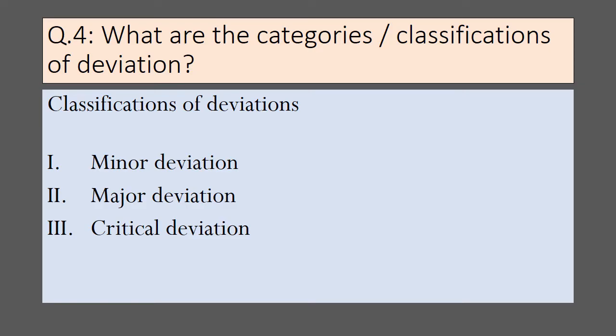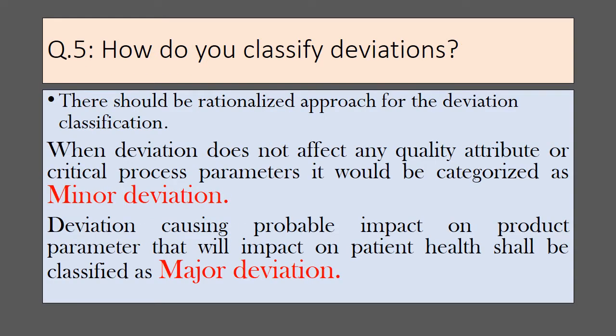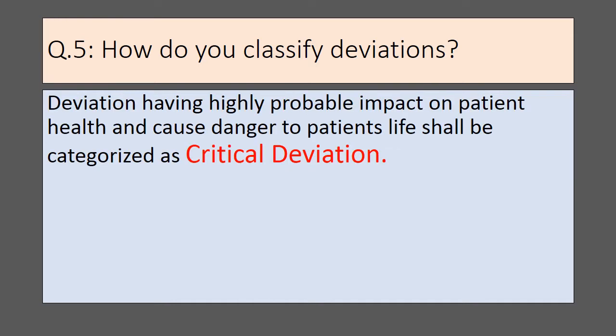What are the categories or classifications of deviations? Deviations are majorly classified into three categories: minor deviations, major deviations, and critical deviations. When a deviation does not affect any quality attribute or critical process parameter, it is categorized as minor. A deviation causing probable impact on a product parameter that affects patient health is classified as major. Deviations having a highly probable impact on patient health and causing danger to the patient's life are categorized as critical.